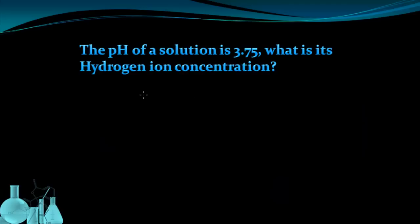Here we have a problem where the pH of a solution is 3.75. So automatically, we don't have a whole number. The question is asking, what is its hydrogen ion concentration? So I know the pH equals 3.75, and I want to know what my hydrogen ion concentration is. That means I'm going to have to start with the pH equation: pH equals the negative log of the hydrogen ion concentration.